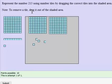To remove a tile, we can drag it out of the shaded area, so let me do that by dragging each of these back out of the shaded area. Now I have 200 units in the shaded area.